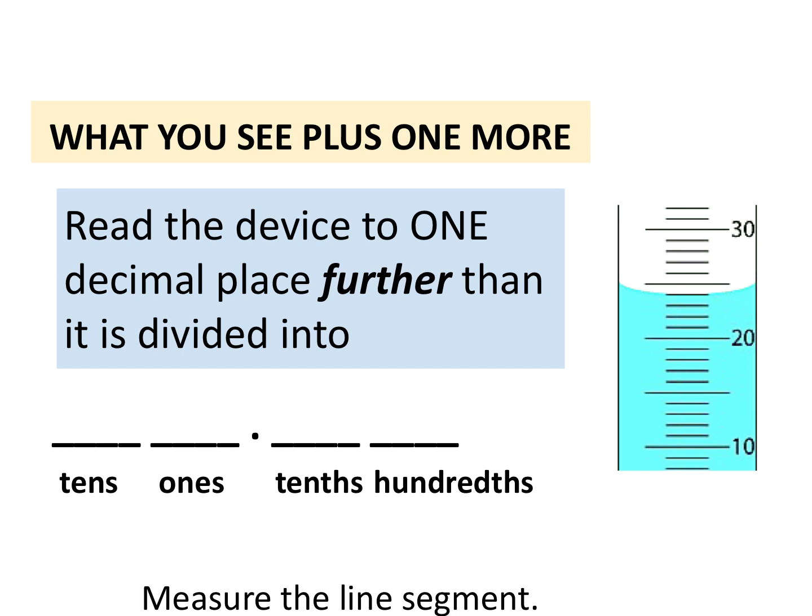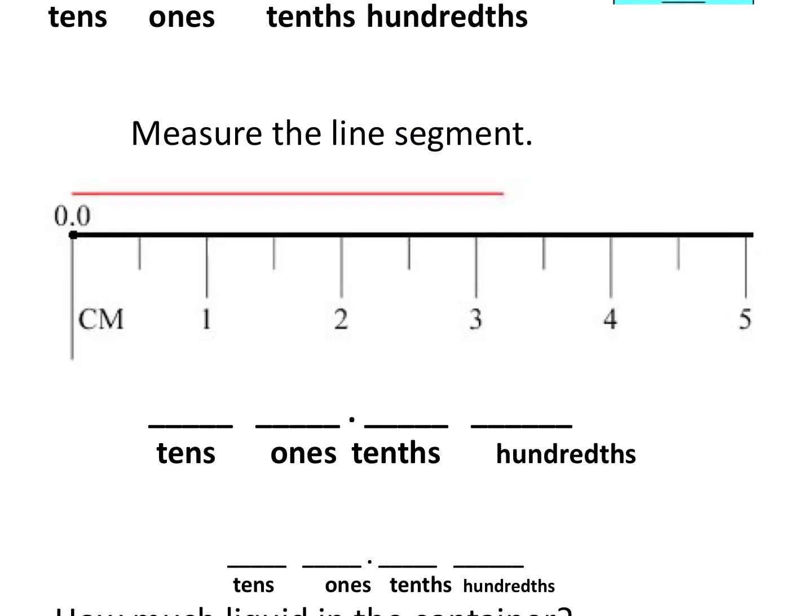So looking at that measurement device, I could say to the tenth place. Practicing this idea of what I see plus one more, if I'm looking at this line segment, I can see that my ruler is separated into 0.5 segments. In this case, I can see the line passes three, so I know I'm in that ones position of three. Because I can't really tell where it is in between three and 3.5, I'm going to estimate 3.2.